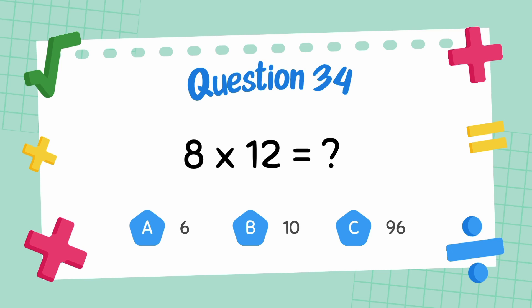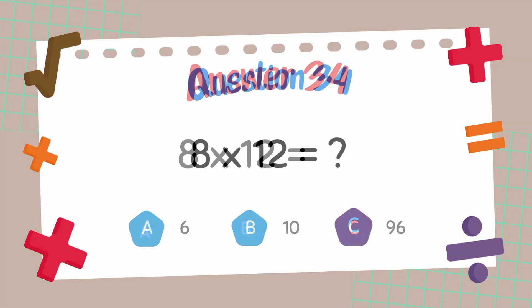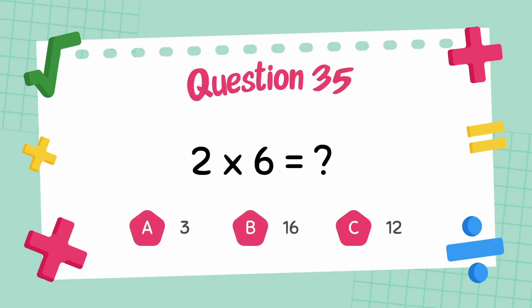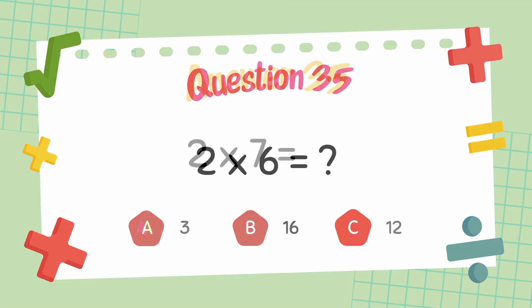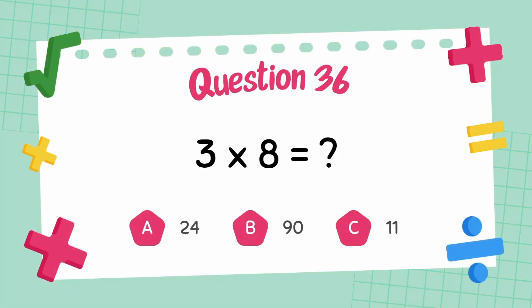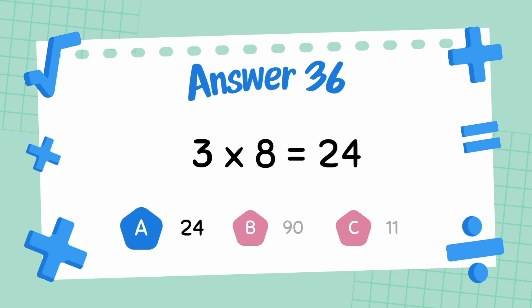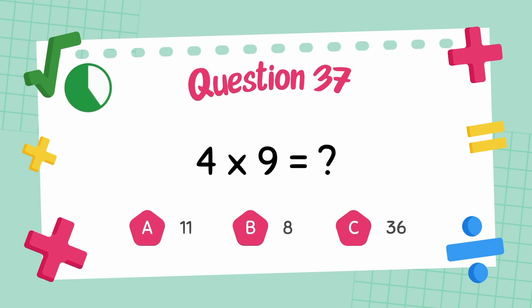What is 8 multiply 12? The answer is 96. What is 2 multiply 6? The answer is 24. What is 4 multiply 9? The answer is 36.